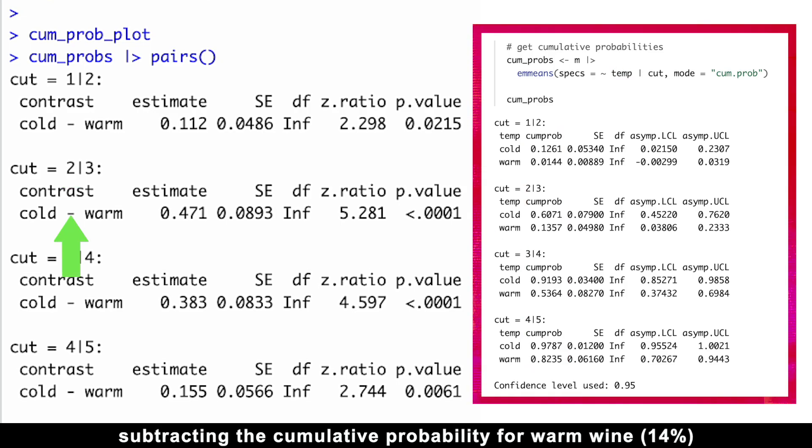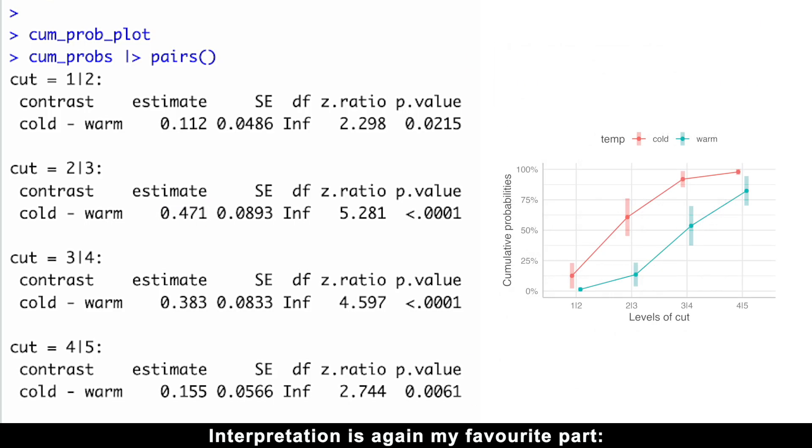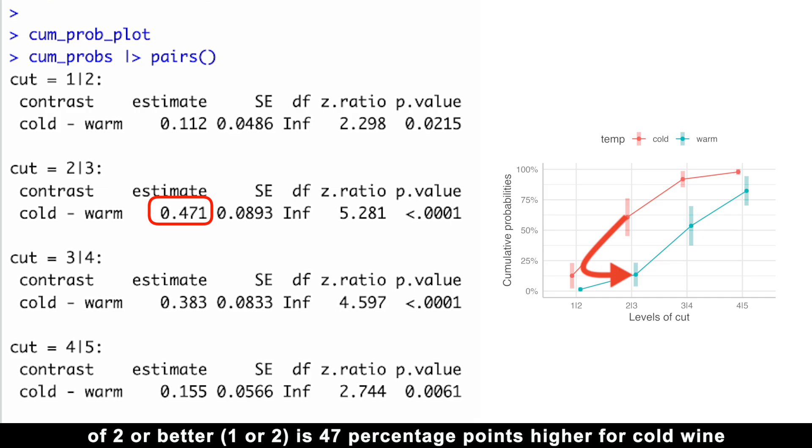For instance, at rating 2, subtracting the cumulative probability for warm wine, 14%, from cold wine, 61%, gives us the absolute risk difference of about 47%. The cumulative probability of having a bitterness rating of 2 or better is 47 percentage points higher for cold wine compared to warm wine.